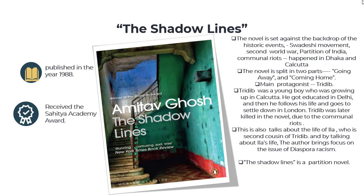The main protagonist is Tridib, a young boy who grew up in Calcutta, got educated in Delhi, and then went to settle in London. The three main settings are London, Kolkata, and Delhi. Tridib was later killed in the novel due to communal riots in East Pakistan. The novel also looks at the life of Ila, who is the second cousin of Tridib. Through Ila's life, the author brings focus on the issues of diaspora and racism, which are also important themes in The Shadow Lines.